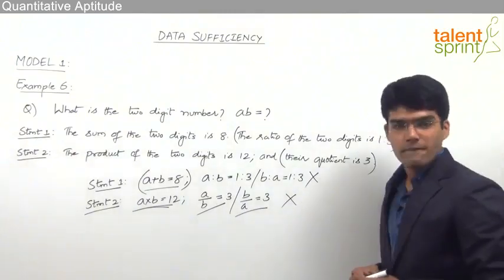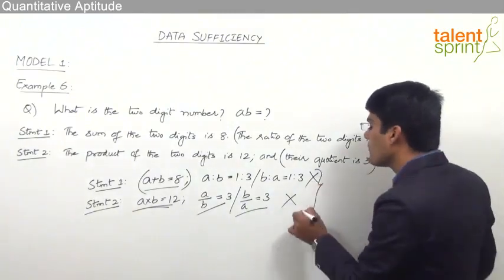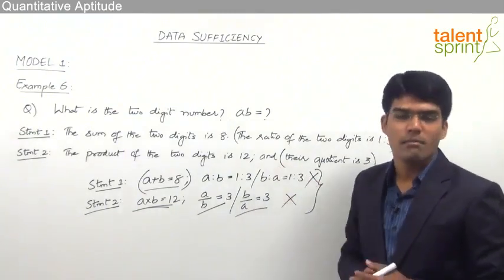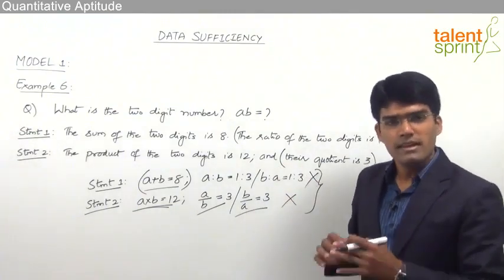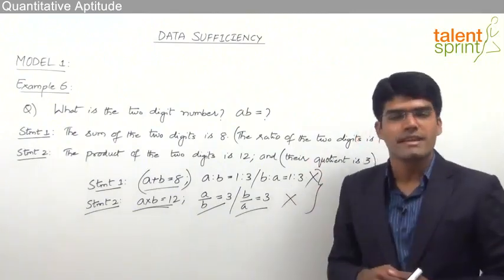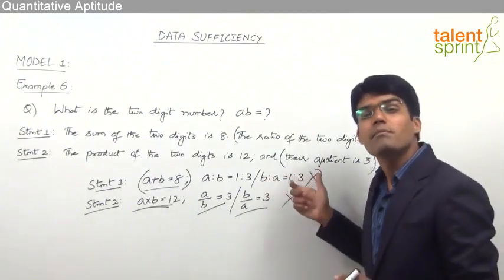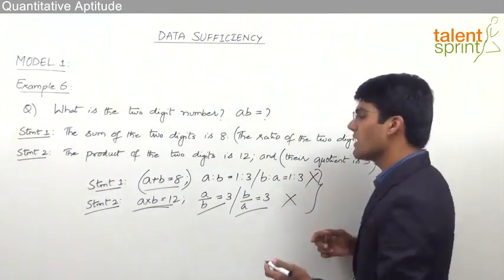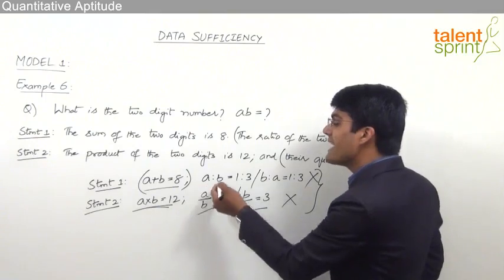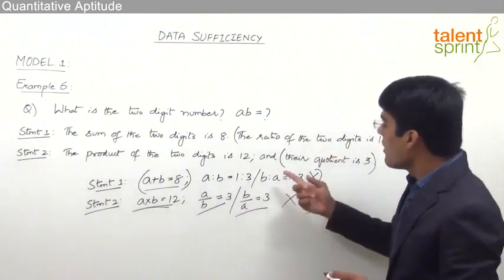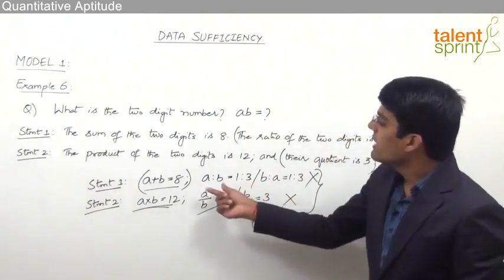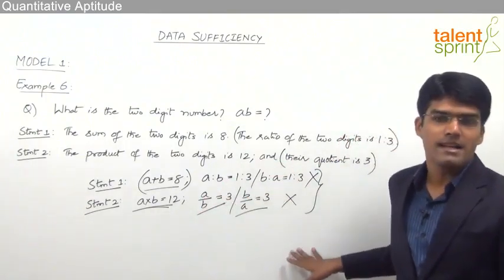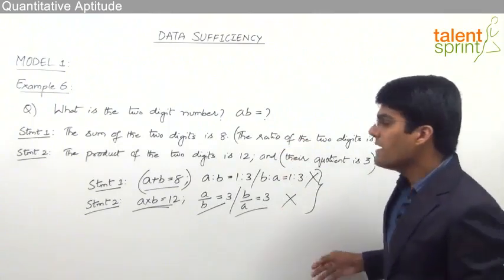Since the individual statements have failed, we now have to try the combination of both statements together. But even combining both statements, there still remains an ambiguity in the second part of each statement. We are still not able to decide: is it A by B equals 1 by 3, or B by A equals 1 by 3, or A by B equals 3, or B by A equals 3?